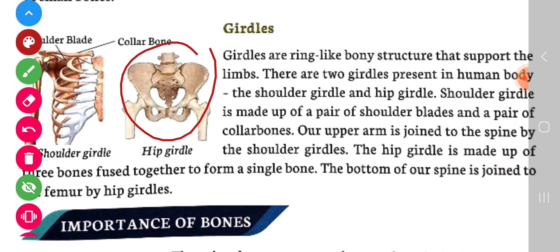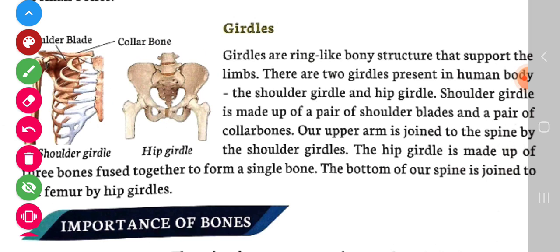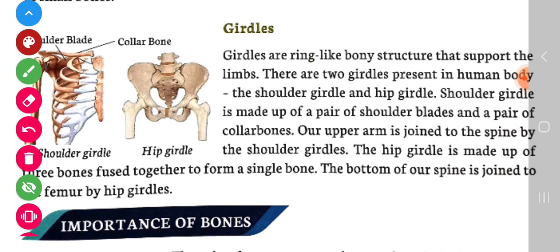You can see in this picture — this is the hip girdle and this is the shoulder girdle. These are the kinds of girdles. The shoulder girdle is made up of a pair of shoulder blades — these are the shoulder blades — and a pair of collar bones — this is the collar bone.